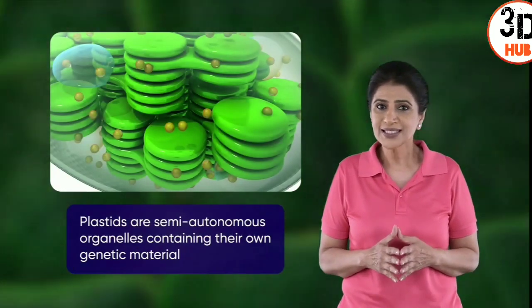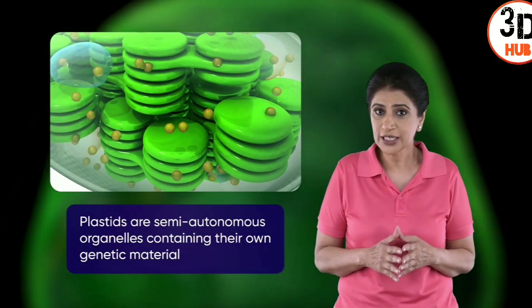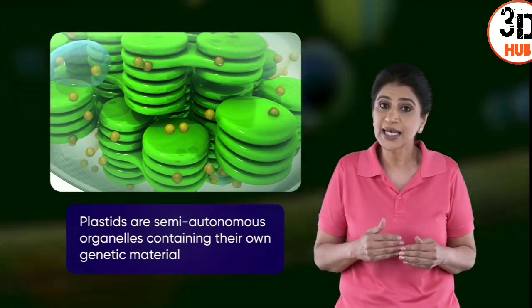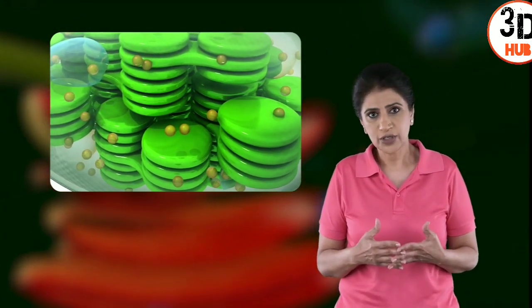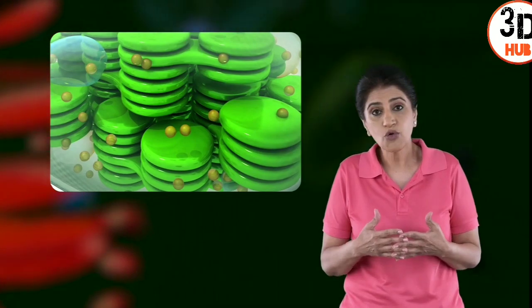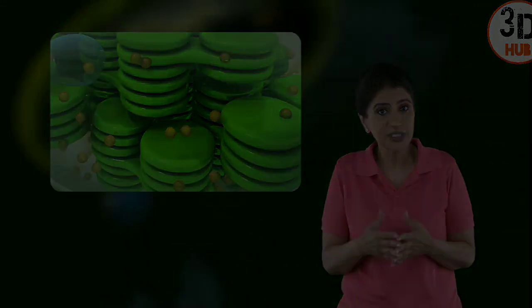Plastids are semi-autonomous organelles containing their own genetic material — they are among the organelles other than the nucleus that also contain their own genetic material.